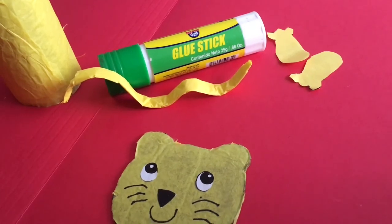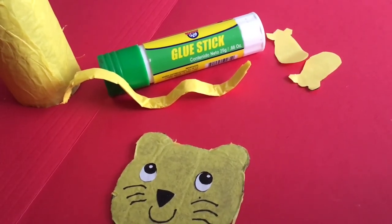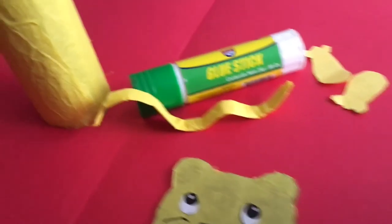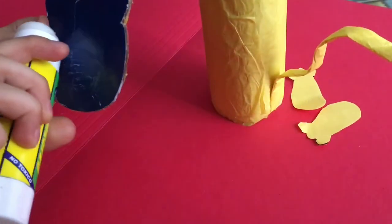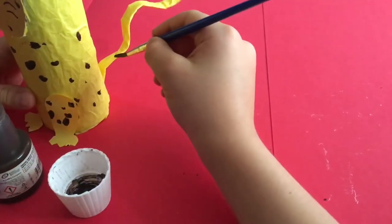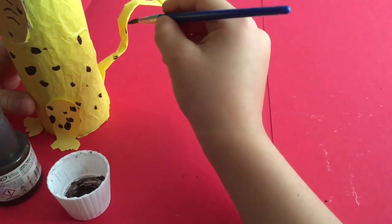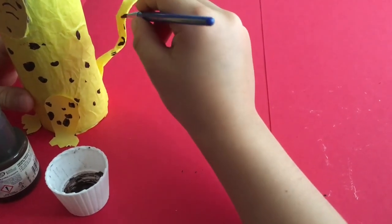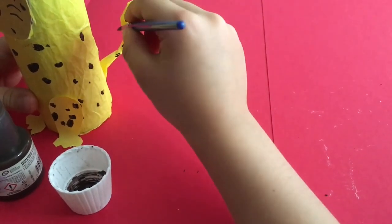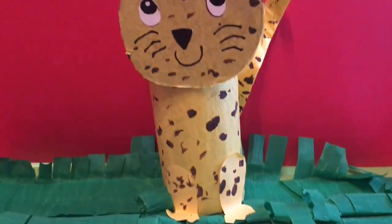Now it's time to paste all the parts, the tail, the face and the legs, on the body. We are going to paint dots on all the body. Now we have here a leopard!